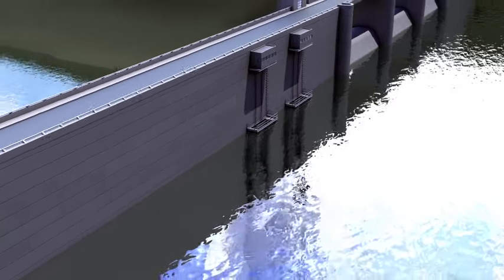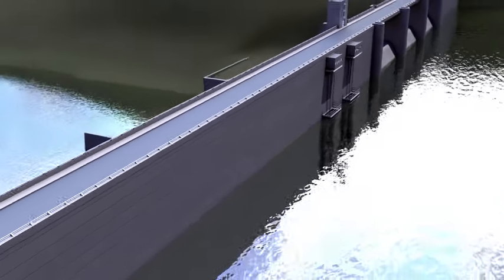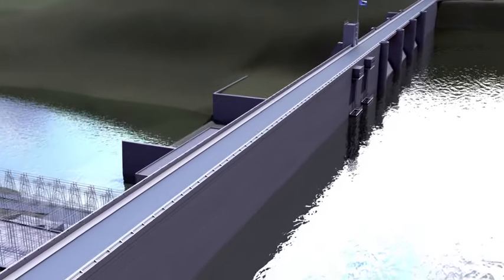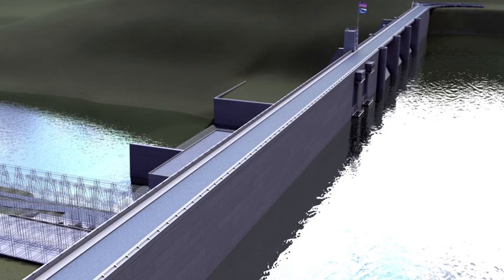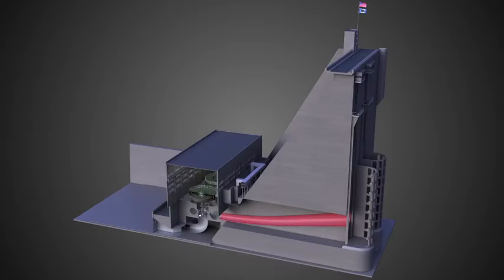When electricity is needed, some of the water in the reservoir is released through a water intake in the dam. Gravity causes the water to fall through a pipe inside the dam, called a penstock.